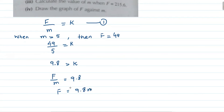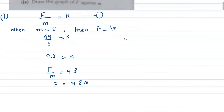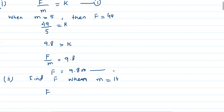So the equation is Force equals 9.8M. Now let's look at the second part. The second part asks: find the value of F when M equals 14. F equals — this is equation 2.